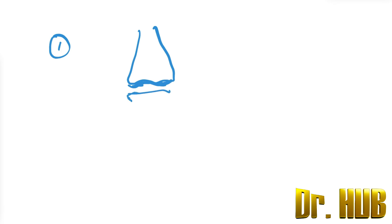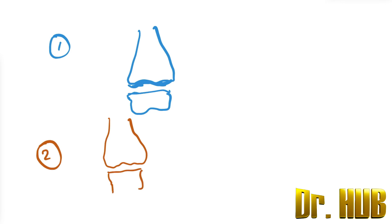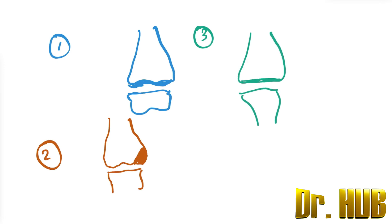Type 1 shows a clean partition through the physis. Type 2 is where the top portion is chipped off. Type 3 is where the bottom is chipped off. Type 4 is where both the top and the bottom are chipped off.